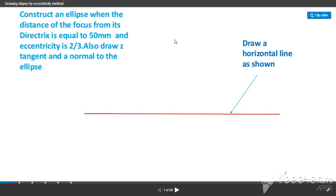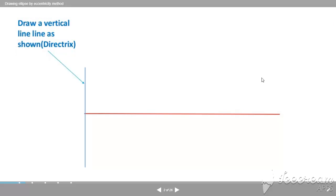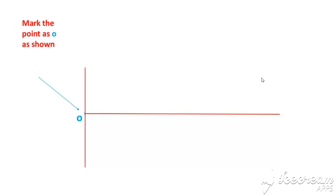Draw a horizontal line as shown in the figure. Here is a horizontal line. Next, draw the vertical line which is the directrix. Mark a point O as shown in the figure.